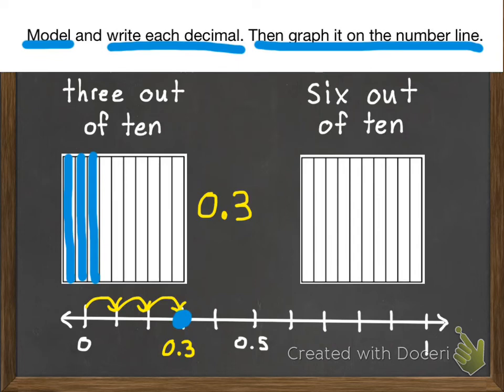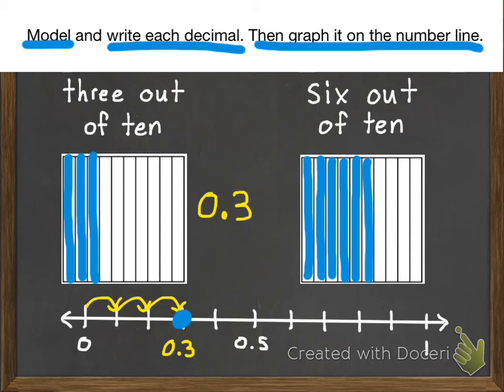My second practice problem, same thing. I need to model six out of ten. So there's six. Write it as a decimal. Six tenths. And then graph it on the number line. I have my three tenths already down there and my five tenths, so I can just count one tenth past five tenths. There we go. Six tenths. And it's graphed.